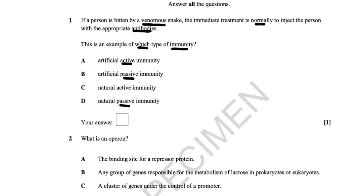This is not active immunity — it is passive immunity. Natural passive immunity involves passing antibodies produced by the mother across the placenta to the fetus. Artificial passive immunity is the injection of antibodies made in a third-party organism. Since this is an injection of externally produced antibodies, the answer is B: artificial passive immunity.